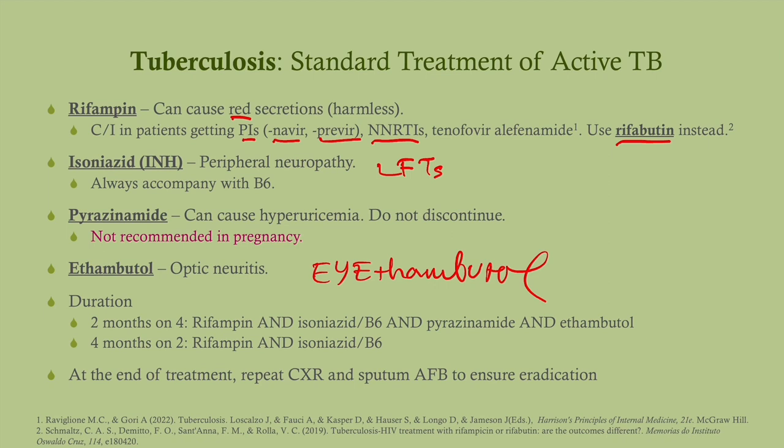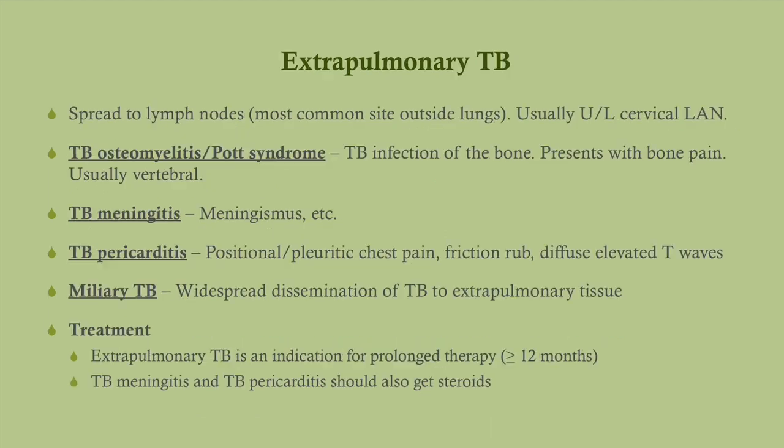The duration is two months on all four drugs, and then four months on two drugs — rifampin and isoniazid. At the end of treatment you're going to repeat the chest x-ray and sputum to ensure you have eradication.